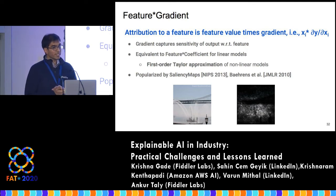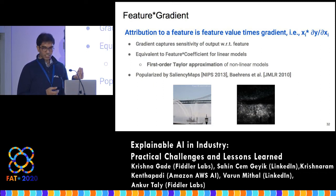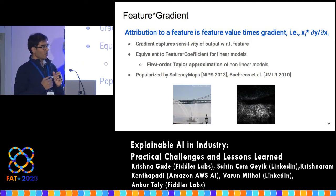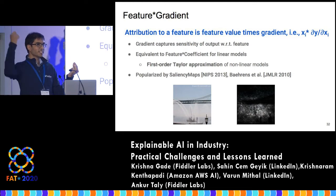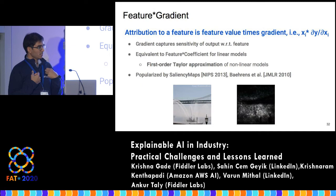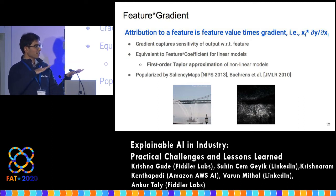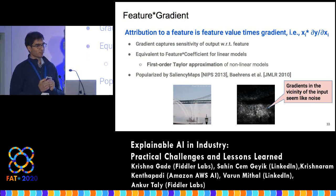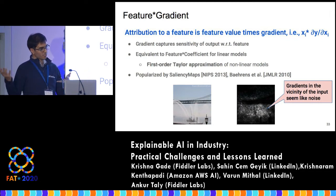How do we solve the attribution problem? In a linear model, the contribution of a feature to a prediction is the feature value times the feature coefficient. For a non-linear model, the analog of a feature coefficient is the first derivative of the prediction with respect to that feature. We attribute a non-linear model by computing the feature value times dy/dx_i for the i-th feature. More mathematically, this is a first-order Taylor approximation of the non-linear model — you linearize it and then explain it using linear model methods.